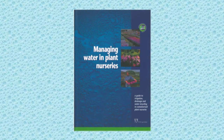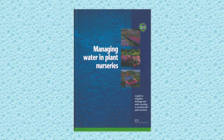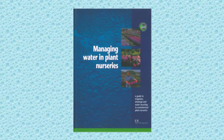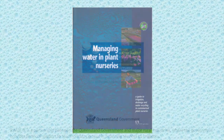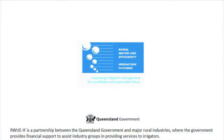Further information on drip irrigation can be found in the text Managing Water in Plant Nurseries. This video has been supported by the Queensland Government Department of Natural Resources and Mines under the Rural Water Use Efficiency Irrigation Futures Initiative.